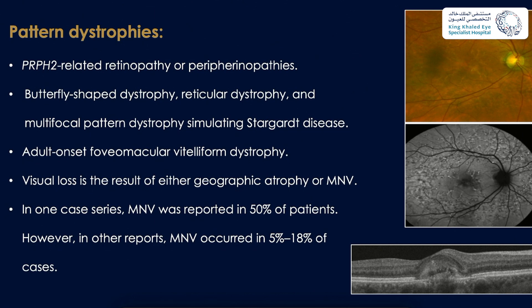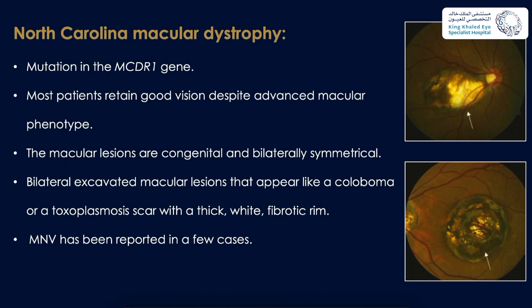Pattern dystrophy, or PRPH2-related retinopathy, includes butterfly-shaped dystrophy, reticular dystrophy, multifocal dystrophy simulating Stargardt disease, and adult-onset foveomacular vitelliform dystrophy. Visual loss results from either geographic atrophy or macular neovascularization. In one case series, MNV was reported in 50% of patients; however, in other reports MNV occurred in 5 to 18% of cases.